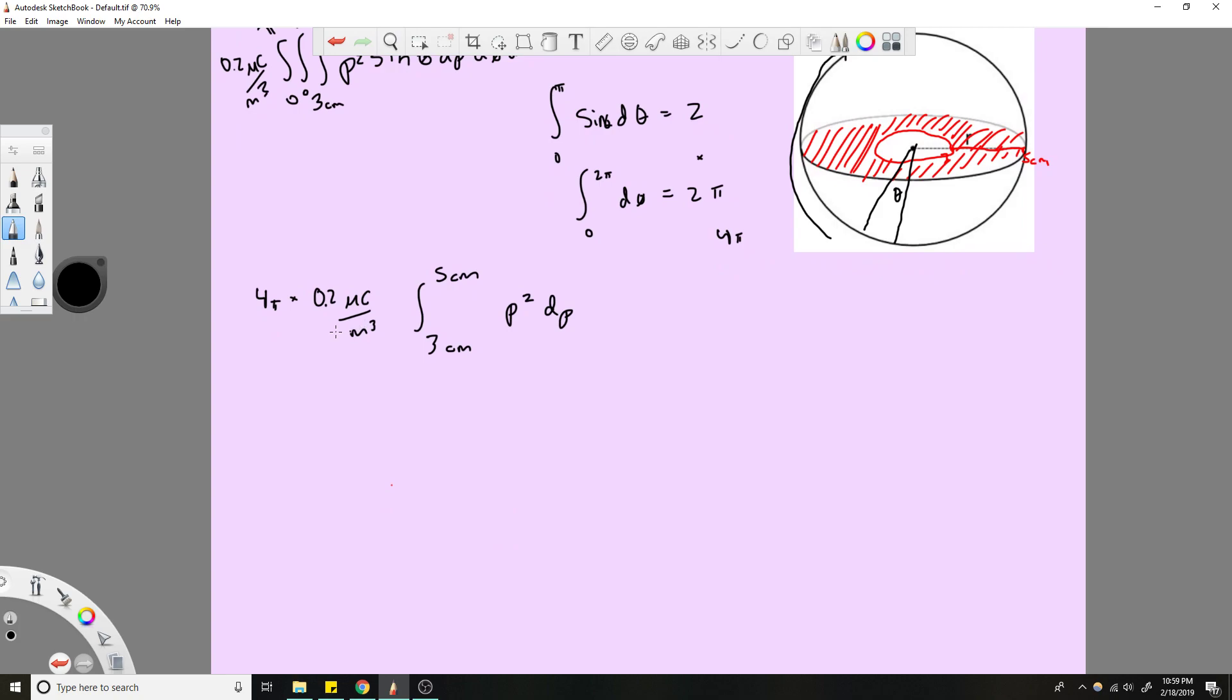So now this one's not too hard either. This will be 0.8π, and this will just be rho cubed over 3. I'll just write out 5 centimeters cubed over 3 minus 3 centimeters cubed over 3.